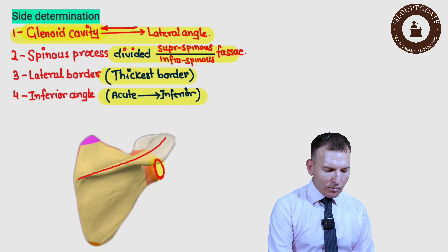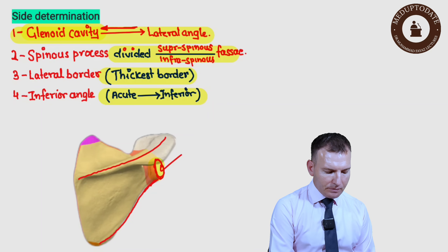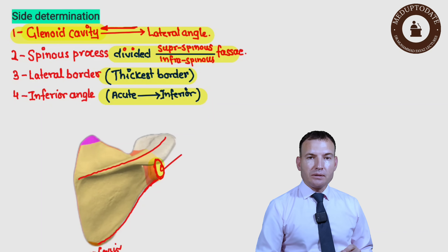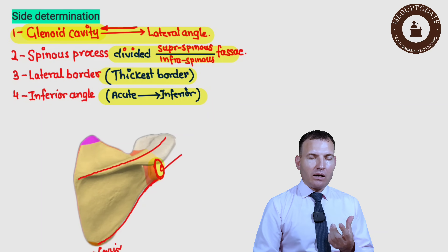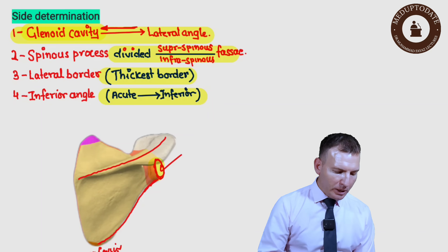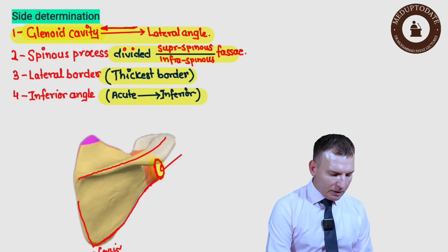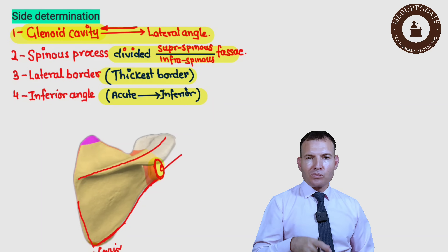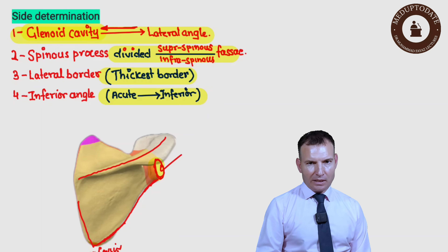To find the lateral border: laterally we have the glenoid cavity, running from the glenoid cavity down to the inferior angle. Also note that the lateral border is thicker compared to the other borders. Then we have the inferior angle, which is more acute — more sharply directed downward — as compared to the superior and lateral angles.